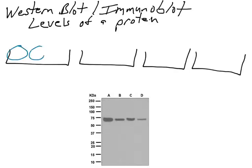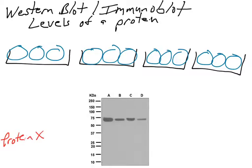Immunoblots detect proteins. Let's say we have cells growing in a dish — four different dishes — and each of those green or blue circles represents a cell. We are interested in some protein, which we'll call protein X. What we'd really like to know is the amount of protein X in each cell relative to the other cells. This is usually a relative determination comparing different conditions that cells have been treated with.